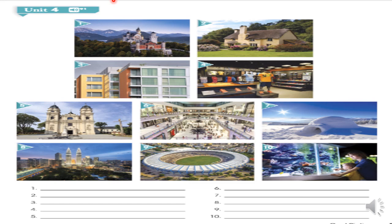Page 127. Unit 4. Track 91. 1. Castle. 2. Cottage. 3. Apartment. 4. Sports Store. 5. Church. 6. Mall. 7. Igloo. 8. Skyscraper. 9. Stadium. 10. Aquarium.